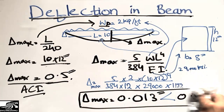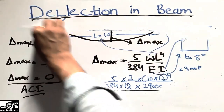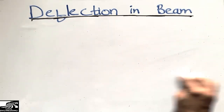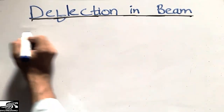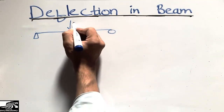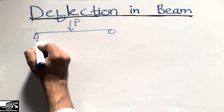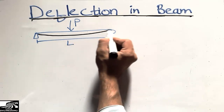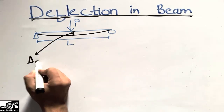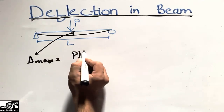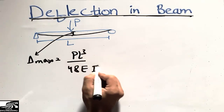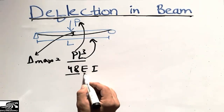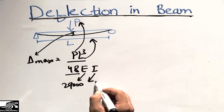Now let's look at deflection formulas for other types of beams. For a simply supported beam with a concentrated point load P at the midpoint, the maximum deflection at the center is: delta_max = PL³ / (48 × E × I), where P is the concentrated load, L is the span, 48 is a constant, E is the modulus of elasticity (29,000 ksi for steel), and I is the moment of inertia.